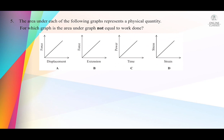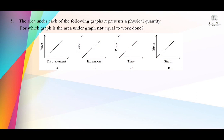Question number 5: the area under each of the following graphs represents a physical quantity. For which graph is the area under the graph not equal to work done? For a force-displacement graph, area equals half force times displacement — that is work done or energy stored. For a force-extension graph, force times extension gives elastic strain energy, which is also work done. Power times time gives mechanical work done, so P × T = W.